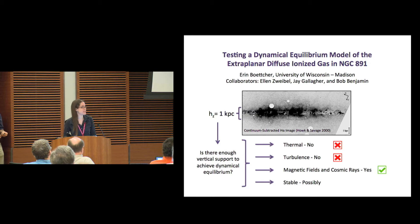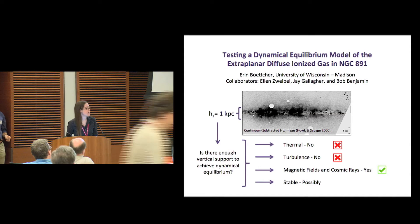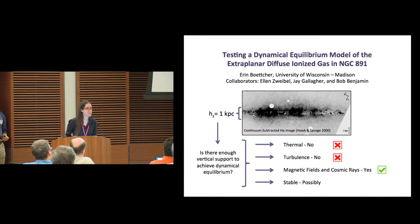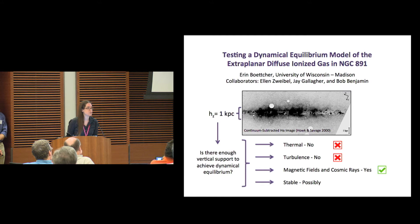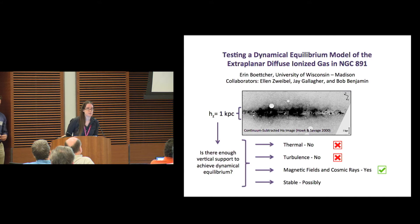My name's Erin Betcher. I'm a grad student here at UW-Madison, and I'm interested in the diffuse ionized phase of extraplanar gas in disk galaxies. I'm presenting results on the DIG layer in NGC 891, asking whether there's sufficient vertical support to explain the fact that the scale height of the DIG layer is a factor of a few larger than the thermal scale height. We argue that thermal and turbulent support are not sufficient, but including magnetic fields and cosmic rays in the model can achieve a scale height of about a kiloparsec. Come on by!